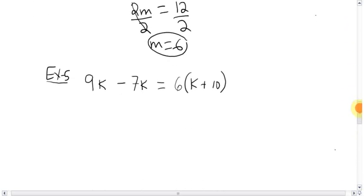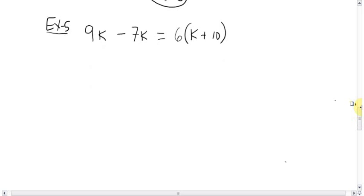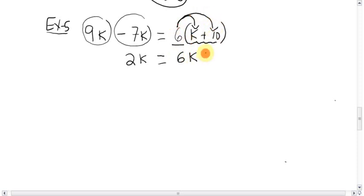Okay. Take a look at this one. Again, simplify first. Check to see if you can simplify first. Can you? On this side, can we simplify anything? 9k minus 7k is 2k. Circles and squares are like terms, so you can make 2k out of them. What about on this side? What can we do? Fishing. 6 catches the fish in the brackets. 6 times k is 6k. 6 times 10 is 60. 6 times positive 10 is positive 60, so it becomes a plus 60.